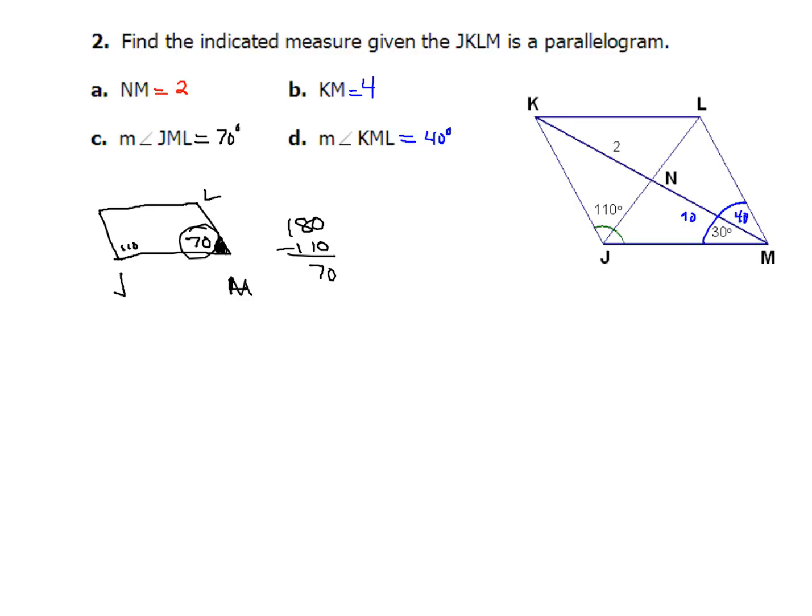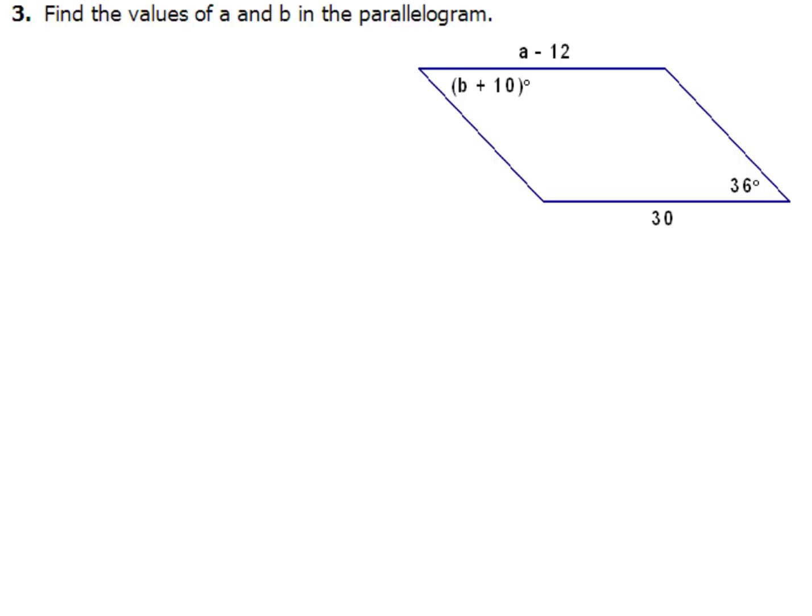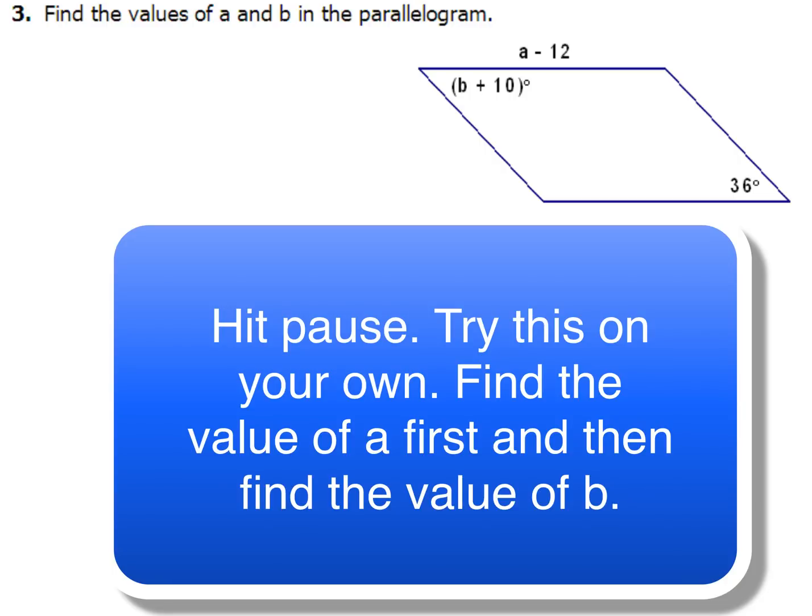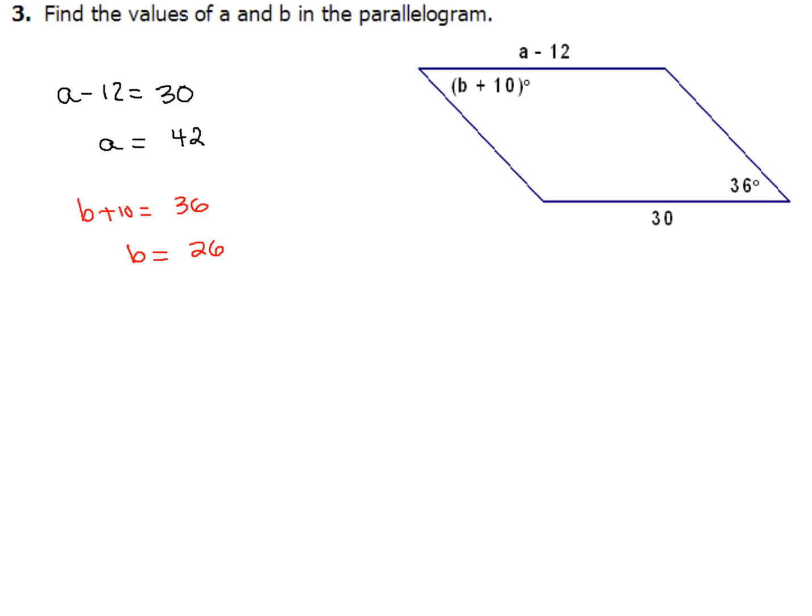So hopefully you came up and understand all four of those examples for number two. Now number three I think you could probably do on your own. What I want you to do is set up an equation for each piece, and solve each piece, first finding the value of A, and then finding the value for B. So if you think you've got this down on your own, hit pause and then come back and see how you did.